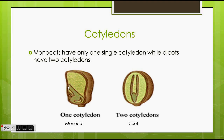As you can see in the monocot, it only has one cotyledon, compared to the dicot on the right, which has two cotyledons. An example of a monocot would be a corn seed. An example of a dicot would be a bean seed.